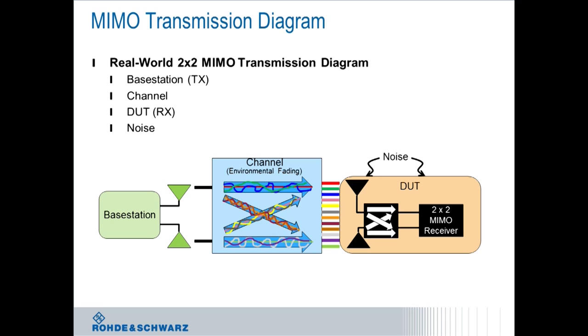The MIMO receiver — they are exposed, obviously, to all of the MIMO transmission. You have the base station antennas, a quantity of two for 2x2 MIMO. They are radiating two separate MIMO streams. And then in the actual channel, you see fading and base station correlation, so you see a very large amount of uncorrelated and faded channels hitting the device under test, as well as noise.